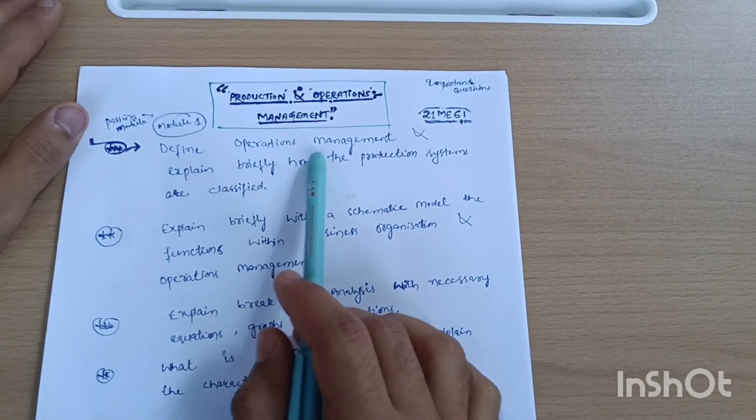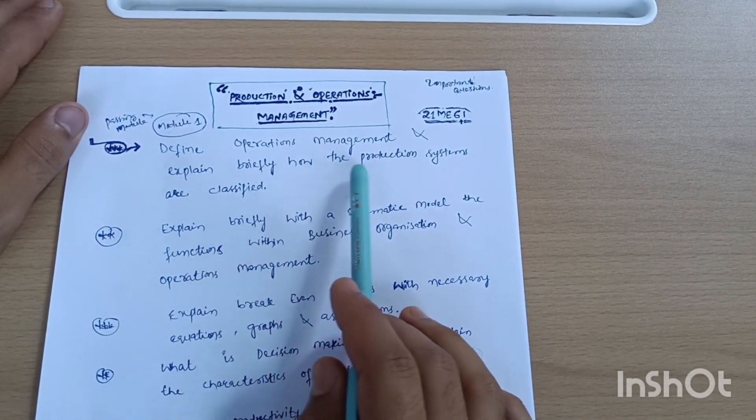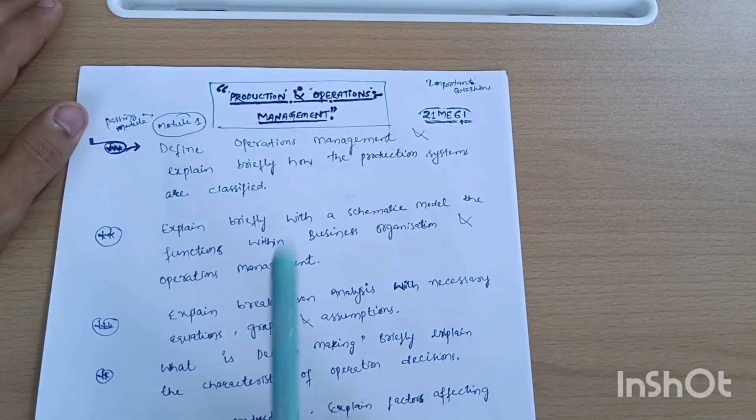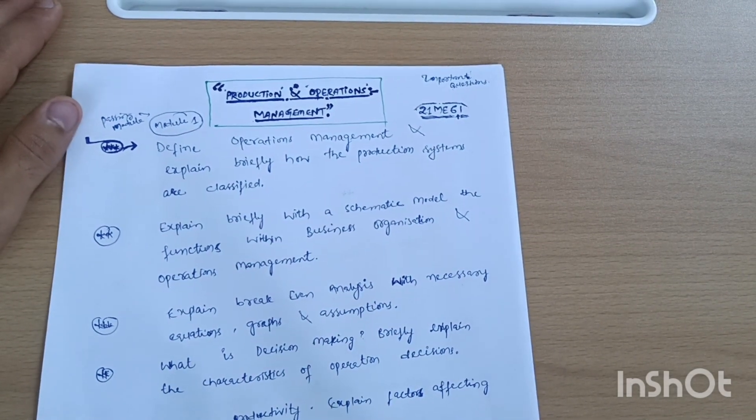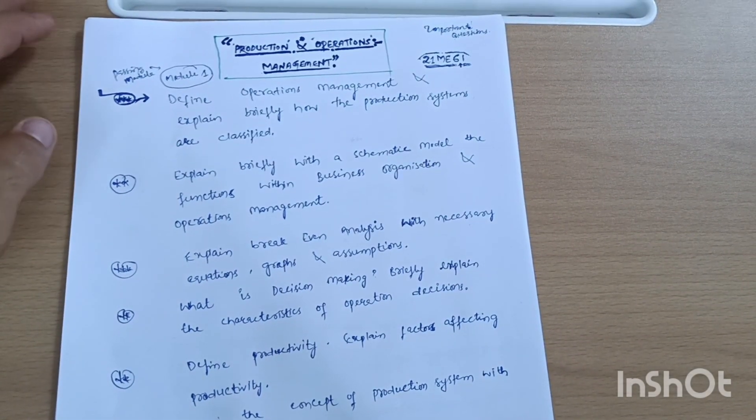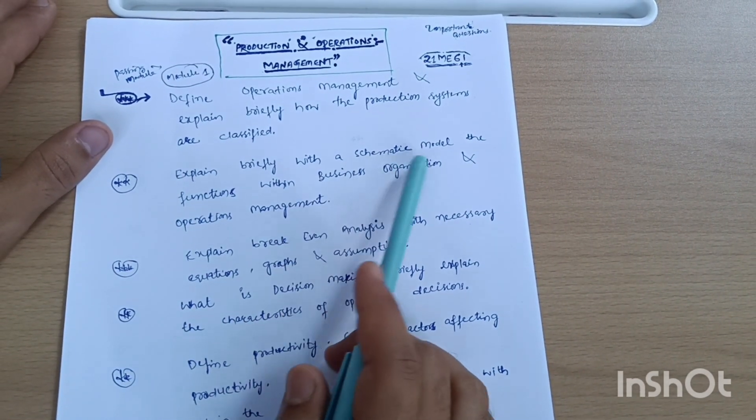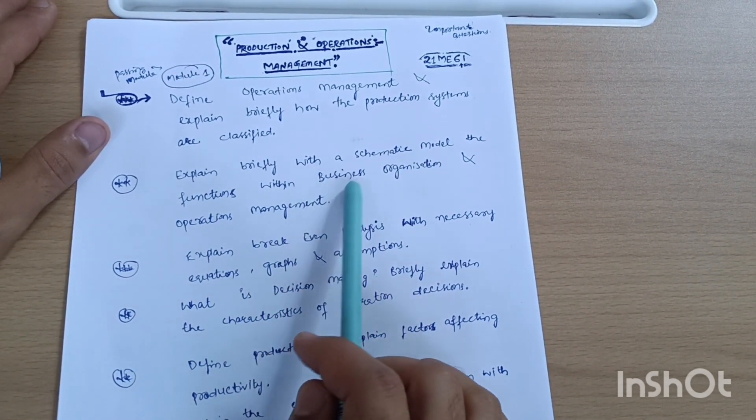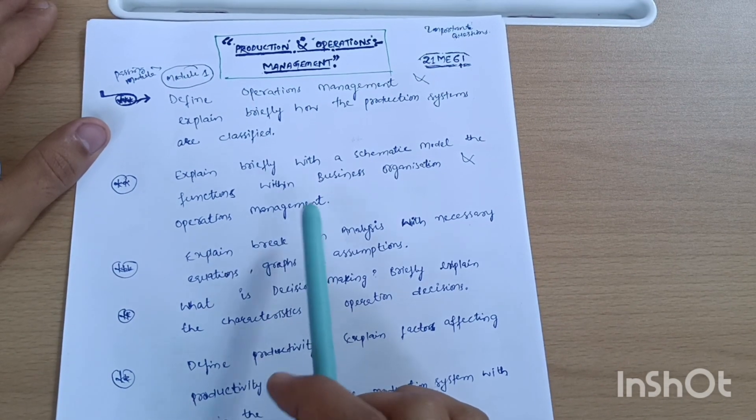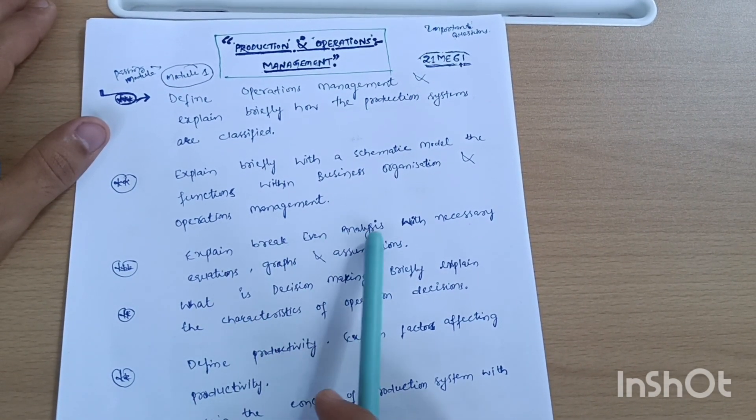First of all, define operations management and explain briefly how production systems are classified. Later on I will tell you what to do for numericals, so stay connected till the end. Explain briefly with systematic model the functions within business organization and operations management. Explain break-even analysis, this is super important, with necessary equations, graphs and assumptions.